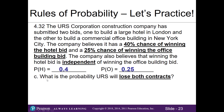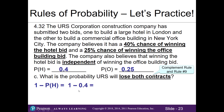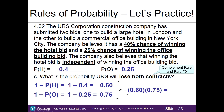Part c: what's the probability URS loses both contracts? Using the complement rule and rule 9, we find the complement of winning each contract: 1 minus 0.4 equals 0.6 for losing the hotel bid, and 1 minus 0.25 equals 0.75 for losing the office bid. Multiplying these together: 0.6 times 0.75 equals 0.45 — a 45% chance of losing both contracts.